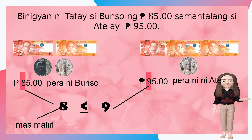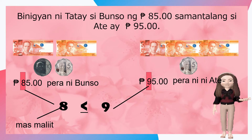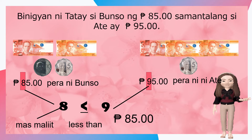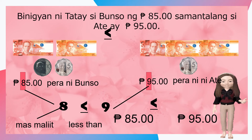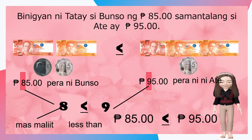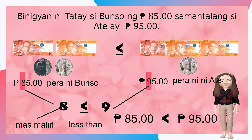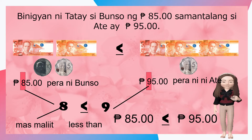Kung ganoon, sino sa dalawa ang mayroong mas maliit na natanggap na pera? Tama, ito ay si bunso, dahil ang walumpot limang piso ay mas maliit o less than sa siyam napot limang piso. Kaya, si bunso ang nakatanggap ng mas maliit na pera.